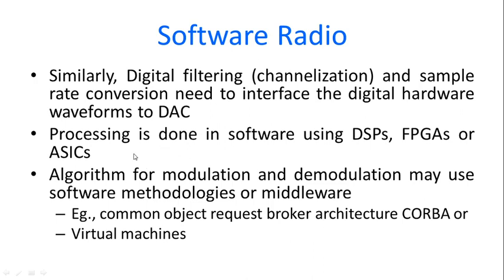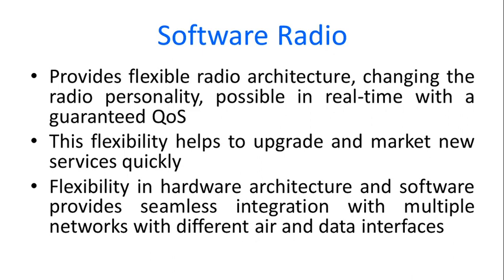After which the processing: if it is going to be a receiver, the processing is done in software using digital signal processors, FPGAs — field programmable gate arrays — or application-specific integrated circuits. For implementing the software these are the hardware being used. The algorithm for modulation and demodulation may use different algorithms and different methodologies or middleware like Common Object Request Broker Architecture — CORBA — or it could use virtual machines, just as in the case of a Java virtual machine. The software radio provides a flexible radio architecture, changing the radio personality possible in real time with a guaranteed quality of service.